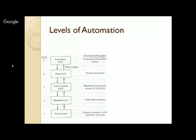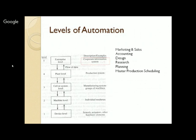If we talk of levels of automation, we can divide automation into five levels. At the topmost level we have the enterprise level, then plant level, then cell or system level, machine level, and device level. At the enterprise level, the major functions are planning, marketing, accounting, design, research, master production scheduling — functions concerned with top management, sales and procurement.